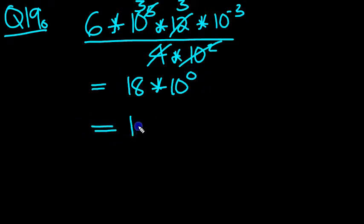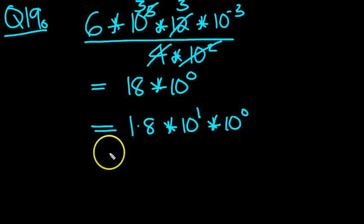Now, we want a number between 1 and 10. So write that 18 as 1.8 times 10 to the 1 to give you the 18 back. Times by 10 to the 0, which is just 1 anyway. So you'll basically end up with 1.8 times 10 to the power of 1.